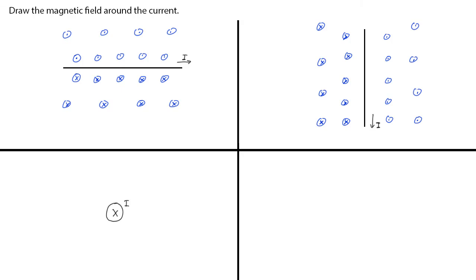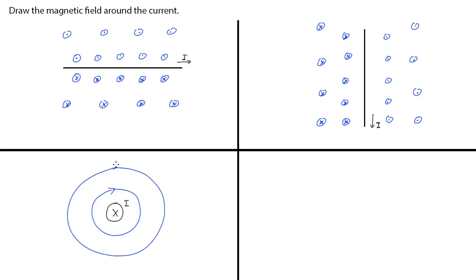If we have a current going into the screen, then we would have a circular magnetic field around that current, and it would point in the direction that our fingers curl — so in this case, it's clockwise. The magnetic field doesn't just exist on one ring around the current; it exists all around the current, so we have multiple field lines. The last example is very similar: this time we have the current pointing out of the screen instead of into the screen, and so the magnetic field would point anticlockwise.